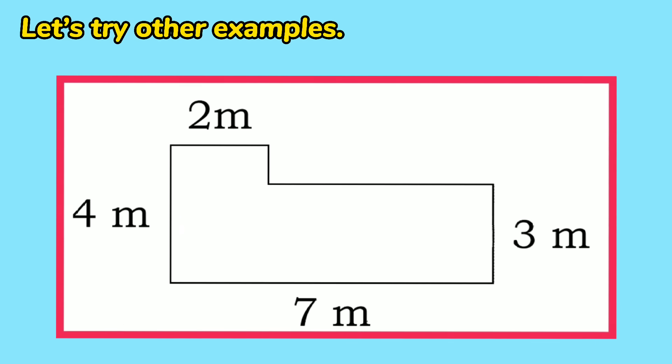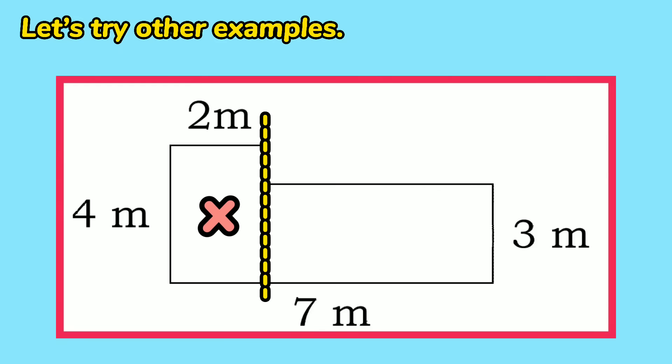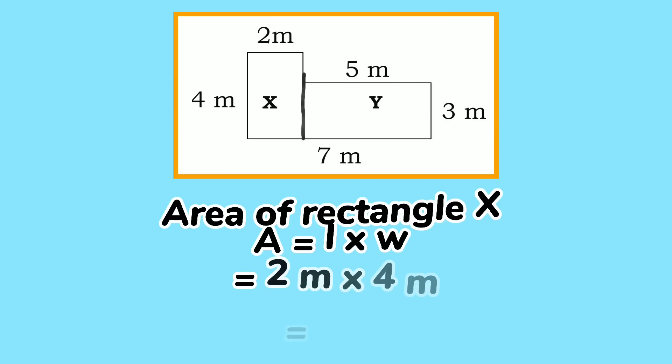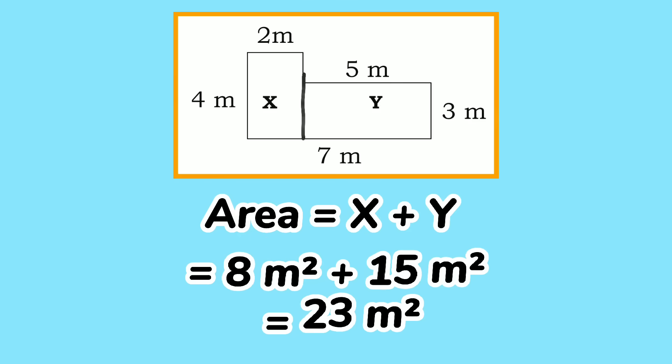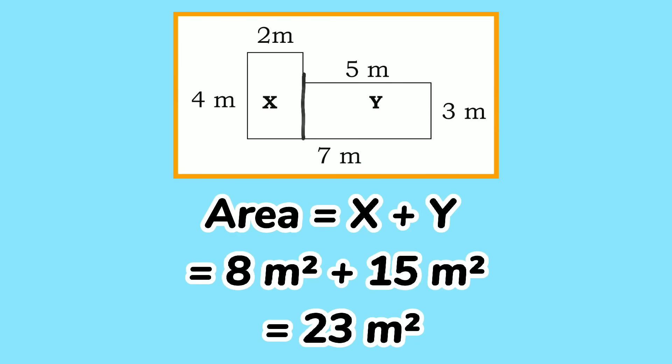Let's try other examples. For this irregular figure, how do you cut it into rectangles and or squares? Let's cut it using vertical lines. Two rectangles are formed: Rectangle X and Rectangle Y. Area of Rectangle X: 2 times 4 is 8 square meters. For the area of Rectangle Y: 5 times 3 is 15 square meters. Let's add these areas — 8 plus 15 gives you 23 square meters.